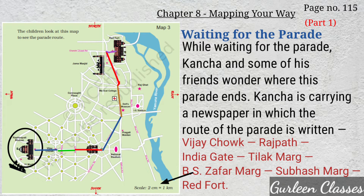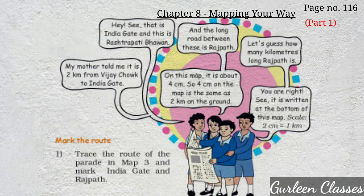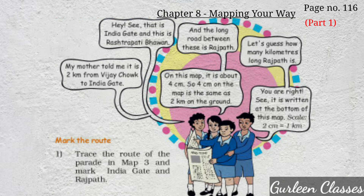Students, see here at the bottom of the map — scale is mentioned: 2 cm is equal to 1 km. And there are 4 directions mentioned: North, South, East, and West. Now on page 116, the children are saying: 'Hey, see that is India Gate and that is Rashtrapati Bhavan, and the long road between these is Rajpath. Let's guess how many kilometers long Rajpath is. My mother told me it is 2 km from Vijay Chowk to India Gate — on this map it is about 4 cm. So 4 cm on the map is the same as 2 km on the ground.' At the bottom of the map it is written: Scale — 2 cm is equal to 1 km.